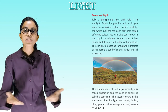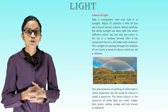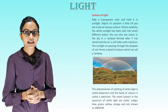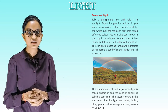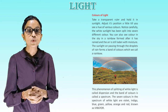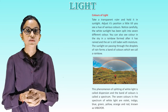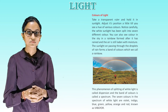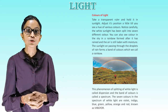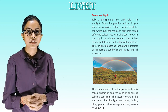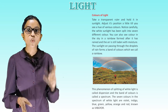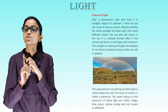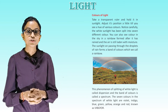Colors of light: take a transparent ruler and hold it in sunlight. Adjust its position till you see a hue of various colors. Notice carefully — the white sunlight has been split into seven different colors. You can also see colors in a rainbow formed after it has rained. The sunlight passing through droplets of rain forms a band of colors which we call a rainbow. This phenomenon of splitting of white light is called dispersion and the band of colors is called a spectrum. The seven colors in the spectrum are violet, indigo, blue, green, yellow, orange and red — known as VIBGYOR.